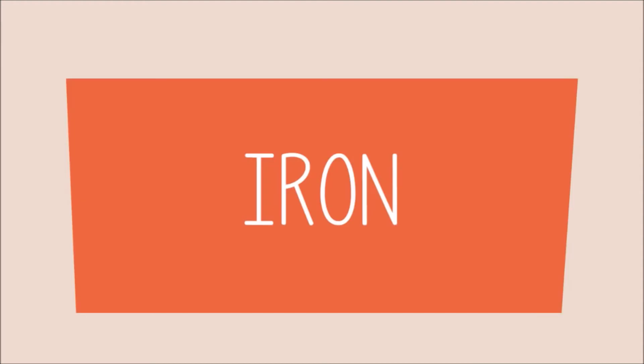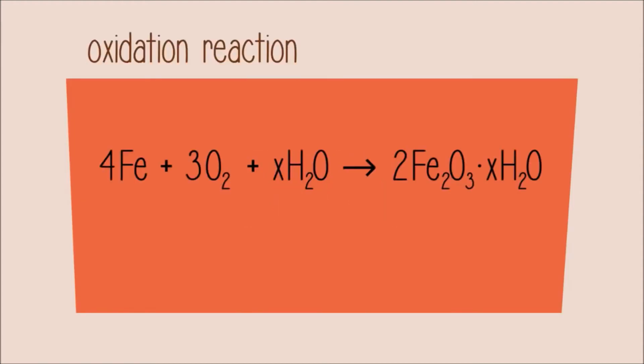So, what has happened here? The iron has undergone an oxidation reaction, forming hydrated iron-3-oxide or rust. Salt and acid act as a catalyst for this reaction, which is why the nail in the second test tube formed more rust than the nail in the first test tube.